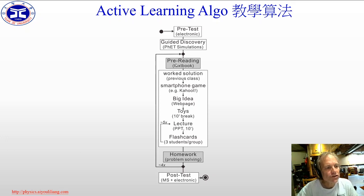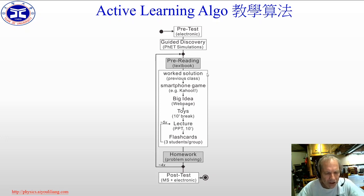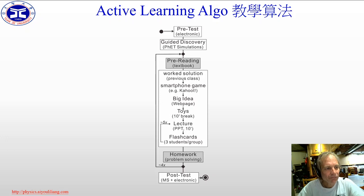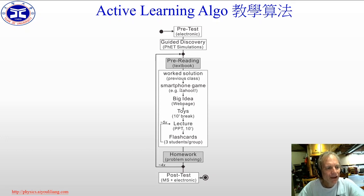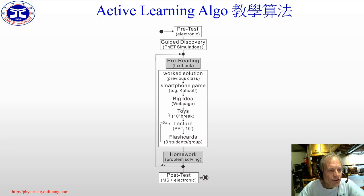During class time, we start off by doing a worked solution from the previous class's homework, step by step, making sure students understand each step. The previous class's homework is submitted electronically, so I know which problems students had the most trouble on, and those will be the ones we concentrate on. We then follow up with a smartphone game which tests whether they did the pre-reading — students usually enjoy this and race to be first, and there may be a small prize. I then discuss the big idea of the lecture using a web page, and that's the first hour of our two-hour contact point.